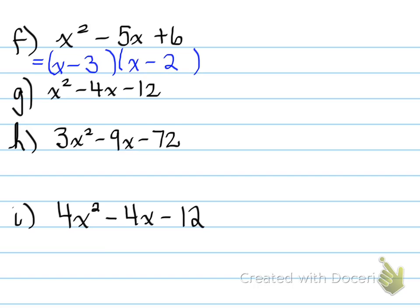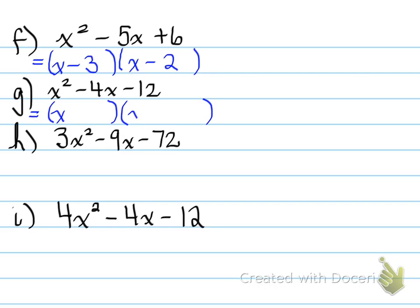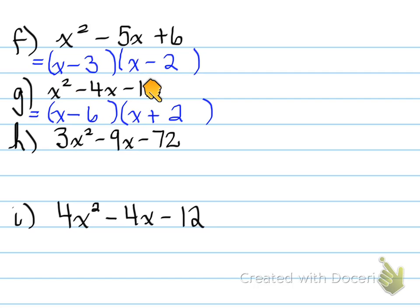g: x squared minus 4x minus 12. What two numbers multiply to give you negative 12 and add to give you negative 4? That will be x minus 6 and x plus 2. Negative 6 plus 2 gives us negative 4, and negative 6 times 2 gives us negative 12.